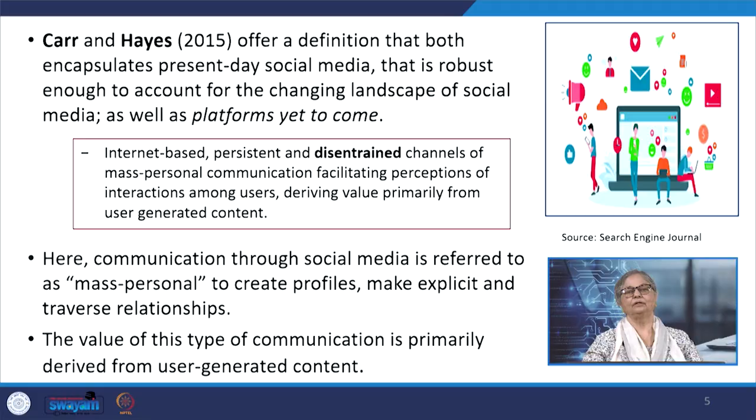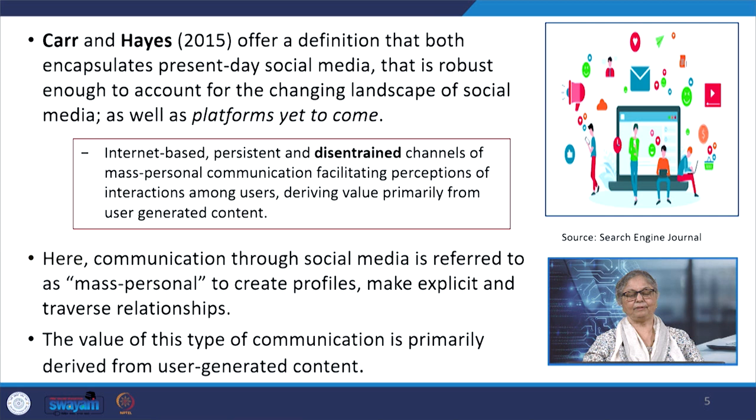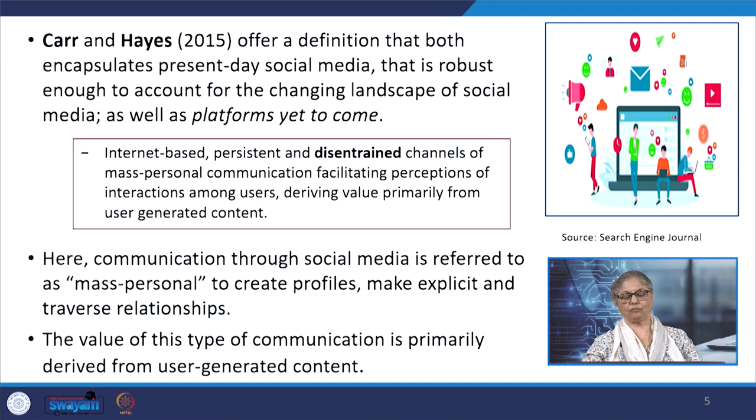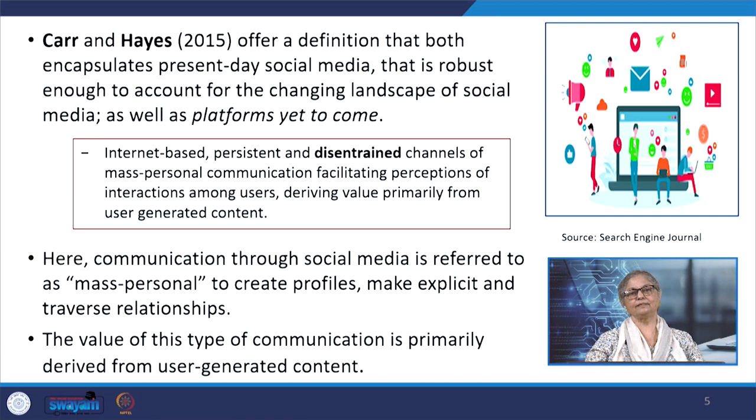In order to discuss further about the features of social media, we will look at another definition by Carr and Hayes. Their 2015 definition encapsulates present-day social media that is robust enough to account for the changing landscape of social media and communication as well as platforms which are yet to come. Communication through social media is referred to as mass personal, to create profiles, make explicit and traverse relationships. The value of this type of communication is primarily derived from user-generated content. Social media is defined as being disentrained and/or persistent.